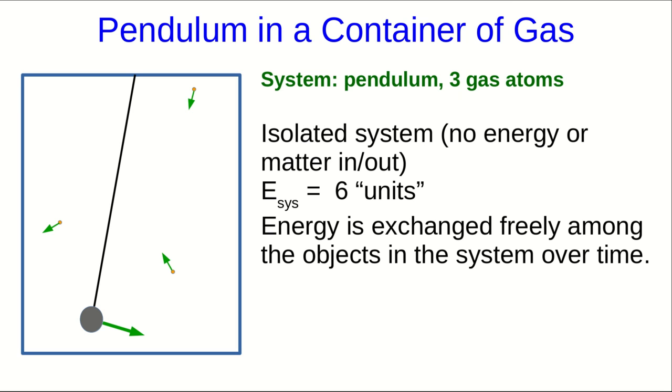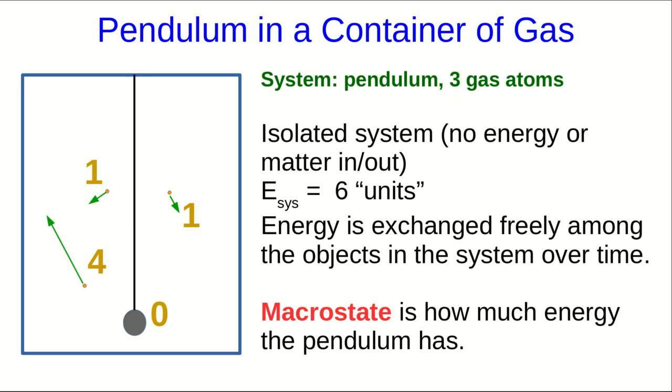And then the energy is going to be exchanged freely among the objects in the system over time. So perhaps here we have three units in the pendulum and one in each of the gas atoms. But if we blink and look again a moment later, perhaps there will be two units in the pendulum and two in each of two of the gas atoms and one with nothing. And blink again and maybe now this is the situation. And what we will call the macrostate is just how much energy the pendulum has.